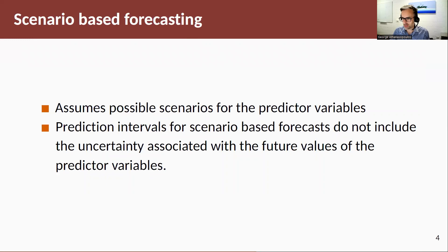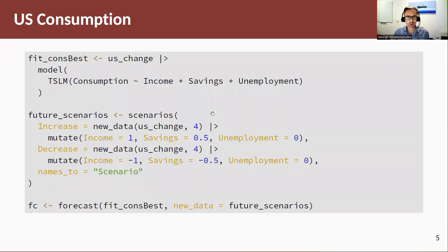The alternative, which involves ex-post forecasting, is scenario-based forecasting. Here we assume possible scenarios for the predictor variables. One thing to keep in mind is that the prediction intervals for scenario-based forecasts do not include the uncertainty associated with the future values of those predictor variables. To do this in Fable it's quite easy — the TSLM function and the Fable package have some very nice inbuilt functions. Let's go back to the US consumption expenditure example and predict consumption using income, savings, and unemployment as our predictors.